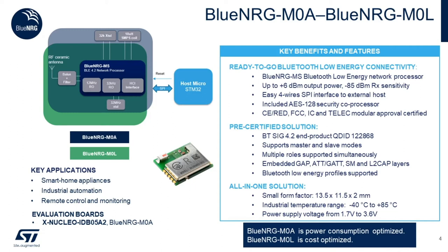They come in a small form factor, which makes them ideal for IoT applications, and support the industrial temperature range going from minus 40 to 85 degrees. Their supply voltage goes from 1.7 to 3.6V, which, along with their ultra-low power consumption, makes them ideal for battery-powered applications. Some of the key applications are smart home and industrial automation, remote control, and monitoring devices.